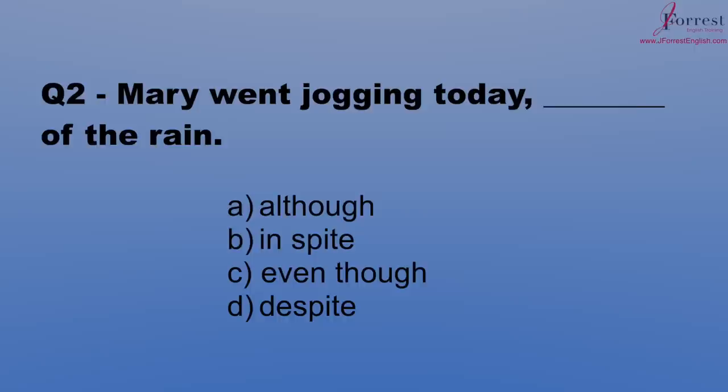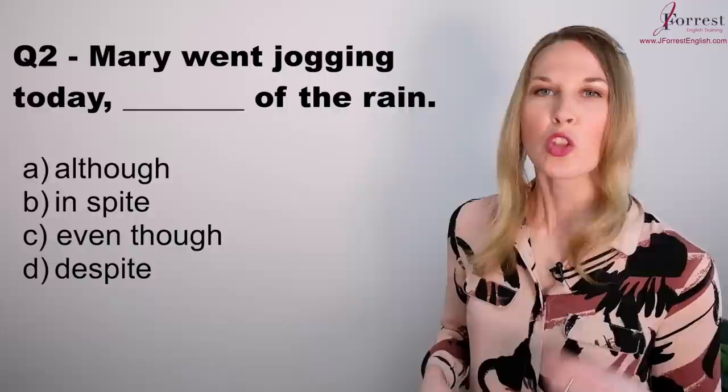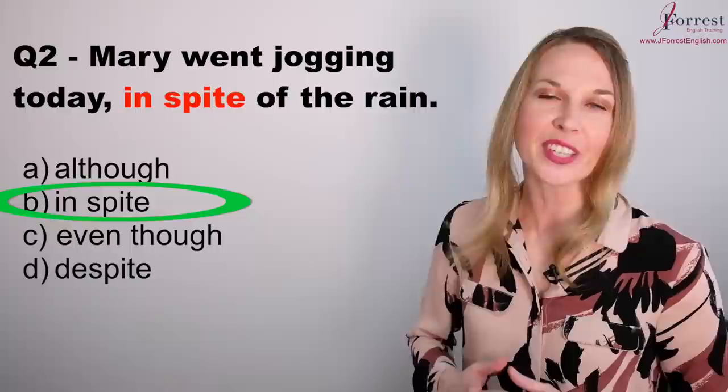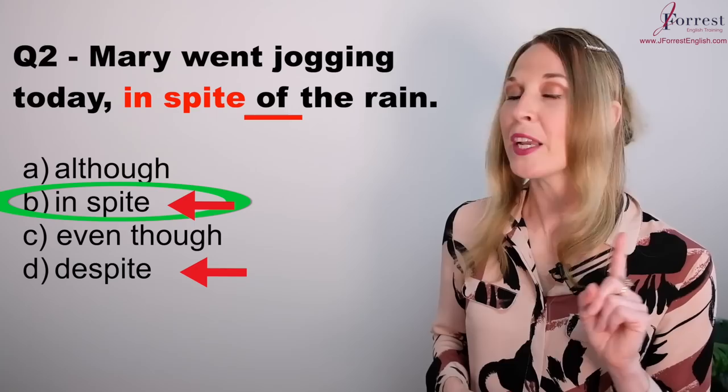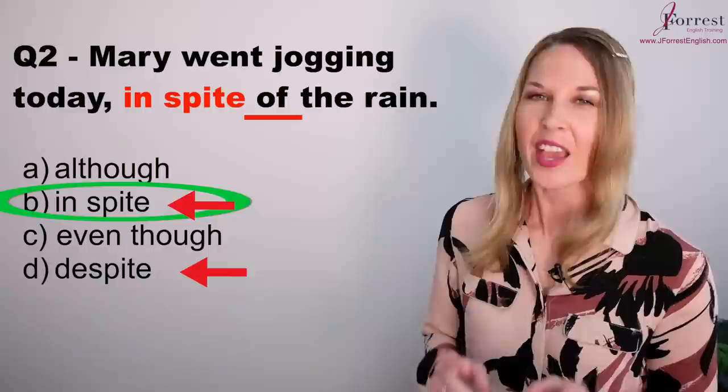Question two: Mary went jogging today, in spite of the rain. The correct answer is B, 'in spite of the rain'. The keyword here is that 'in spite of' and 'despite' have the same meaning, but you don't say 'despite of' — you just say 'despite'. I have a full lesson explaining this; I'll leave the link in the description below.